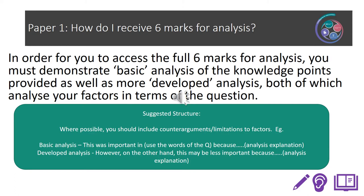We're now looking at the analysis section of the essay, where there are 6 marks available. To access the full 6 marks, you must demonstrate both basic analysis and developed analysis. A suggested structure is to first explain the factor in terms of the question — this is your basic analysis — and then include counterarguments or limitations to factors for developed analysis. Your teacher will have given you examples of analysis relevant to the essays you've been studying.